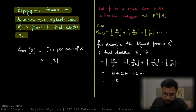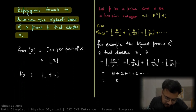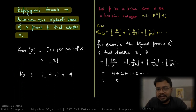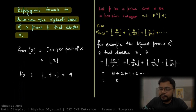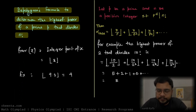For example, floor of 4.3 would be just 4, because it takes only the integer part and discards the decimal portion 0.3, giving back the integral part which is 4.